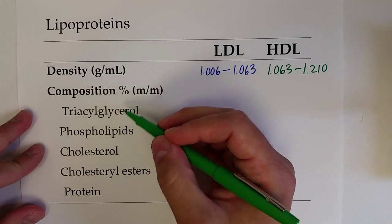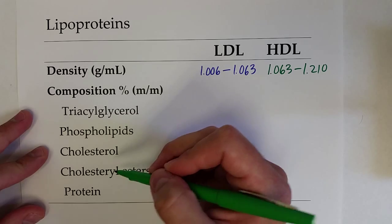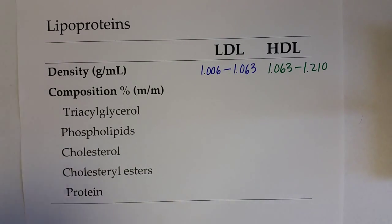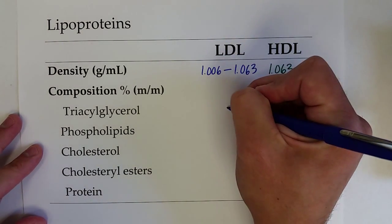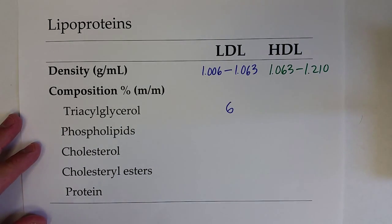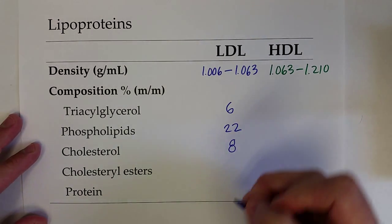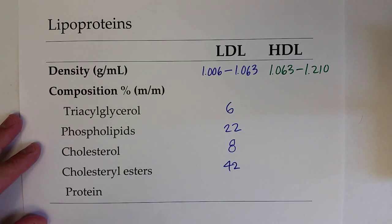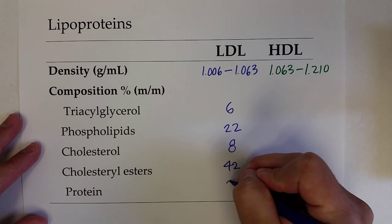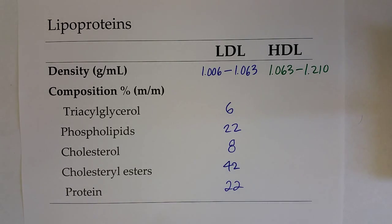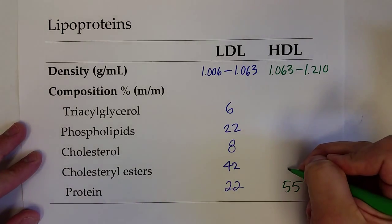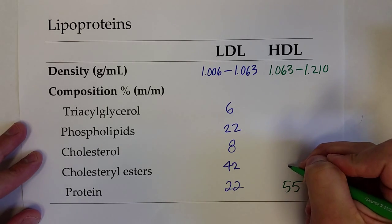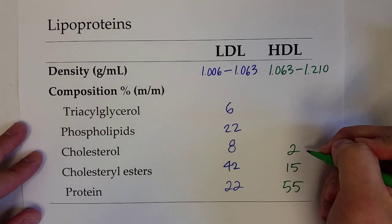If we break them up into the different types of molecules contained in each lipoprotein, we can see where the difference in density comes from. LDL lipoproteins are about 6% triacylglycerols, 22% phospholipids, 8% cholesterol on the membrane, 42% cholesterol esters, and 22% proteins. High density lipoproteins have a much higher percentage of proteins and a much lower percentage of cholesterol esters and cholesterol, with about the same percentage of phospholipids and triacylglycerides.